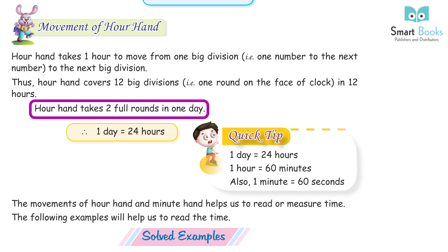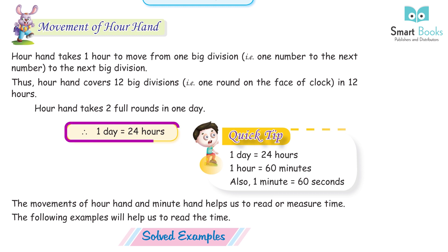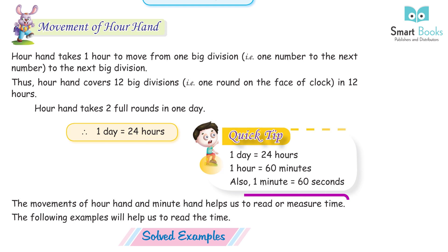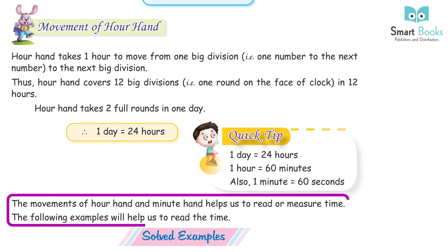The hour hand takes 2 full rounds in a day. Quick tip: 1 day = 24 hours, 1 hour = 60 minutes, and 1 minute = 60 seconds. The movement of the hour hand and minute hand helps us to read and measure time.